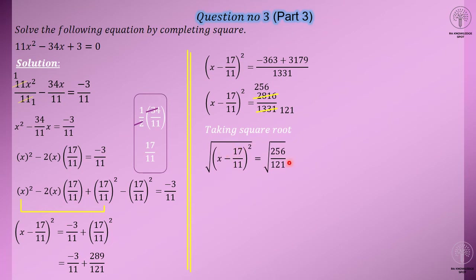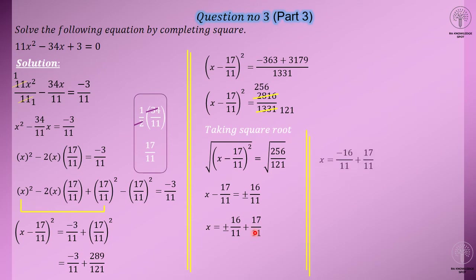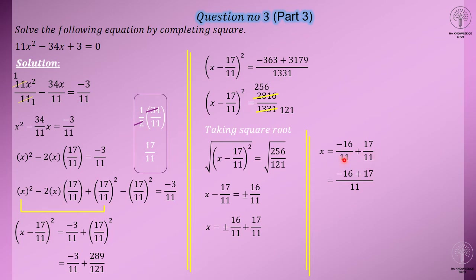Then we take the square root of both sides. After applying the square root, the left side becomes x minus 17 by 11. The square of 17 by 11 cancels with the square root. The square root of 256 gives 16, and the square root of 121 gives 11, with a positive-negative sign. The negative 17 by 11 moves to the other side as positive. So we have x equals 17 by 11 plus or minus 16 by 11.